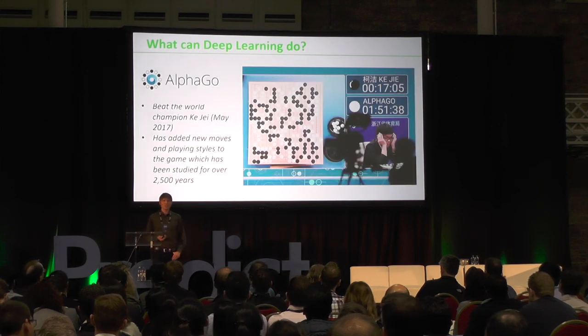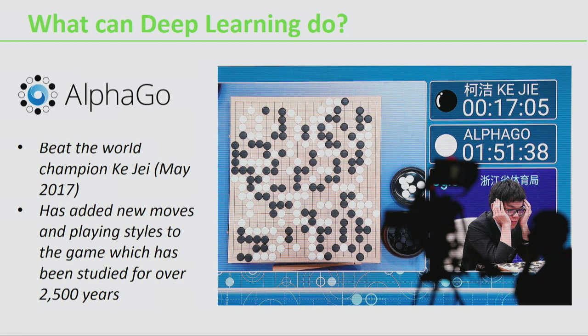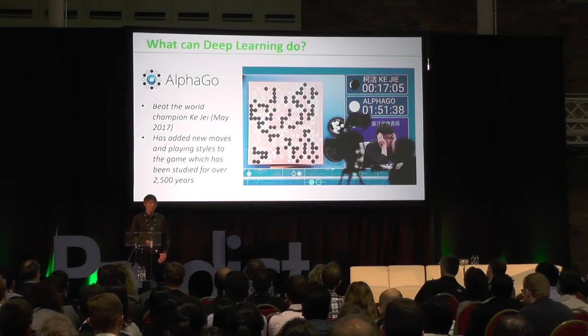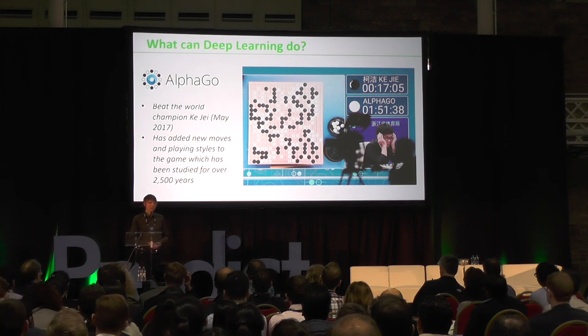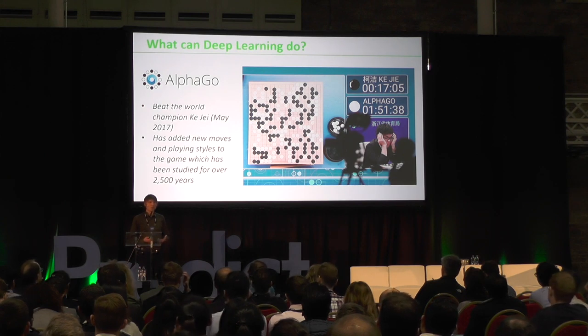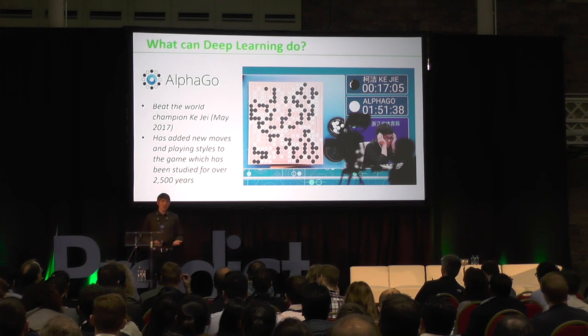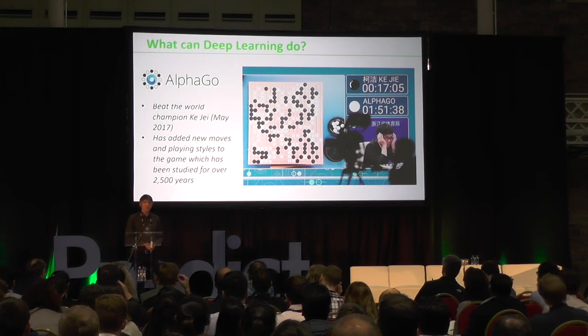Another recent innovation is Google's DeepMind AlphaGo. Go is an ancient Chinese game a few thousand years old and very complex. Back in 1997, IBM's Deep Blue beat chess champion Kasparov. However, Go is a much more complex game with many more possible game states, and many people were saying it would be many years before a computer could beat a human expert. That happened in May of this year when AlphaGo beat the current world champion. AlphaGo has also introduced many new moves and playing styles — human players are now learning from the moves AlphaGo has brought to the game.